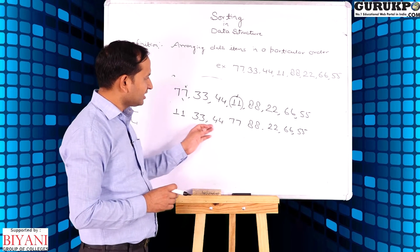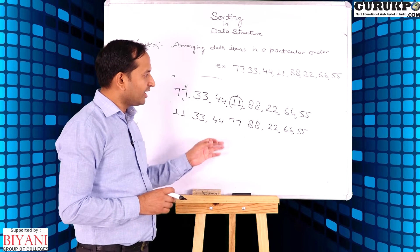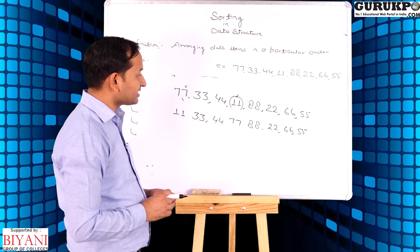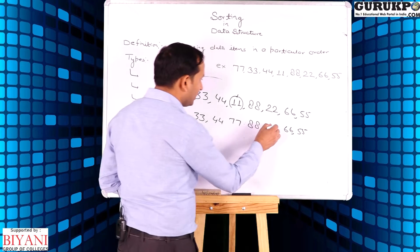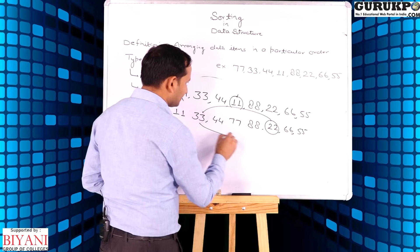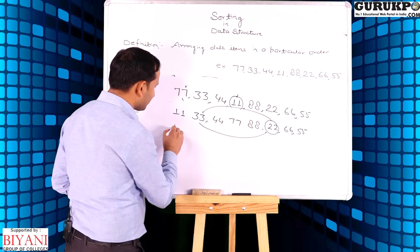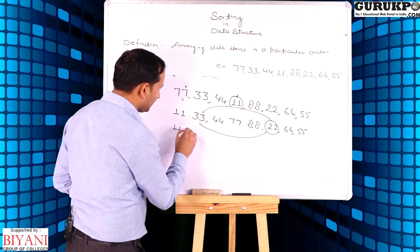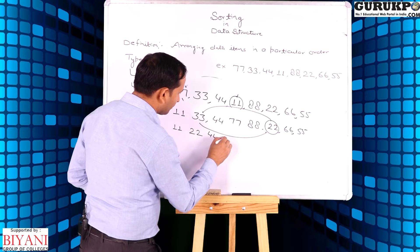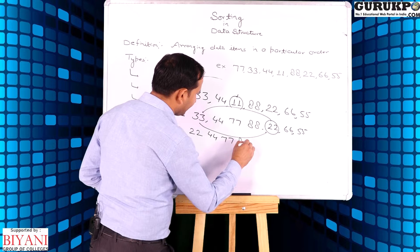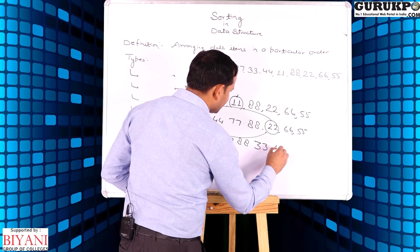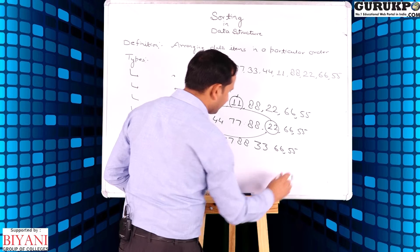Now we scan the entire list again and find out the second smallest element. The second smallest element is 22, and we swap 22 into the second place. Now the list will be: 11, 22, 44, 77, 88, 33, 66, 55.